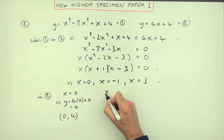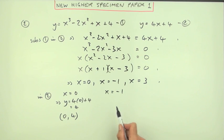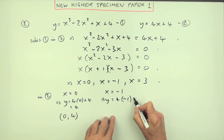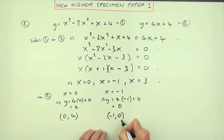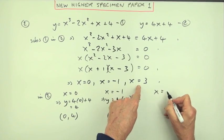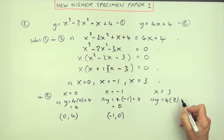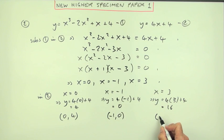So that means y would be four times it add four - negative four and four is zero. So this point's the point (-1, 0). And lastly x equals three - what's its y coordinate? Four times it add four - four threes or twelve, and four is sixteen. So the last one is (3, 16). Now you get the final mark.